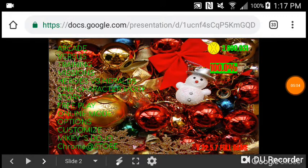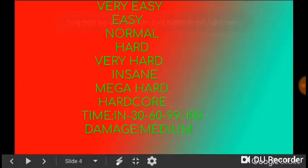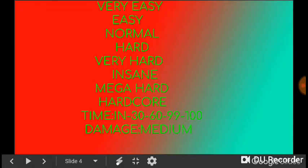A big idea is of MVS3. Character list. Wait, let me see the character list. Good. Very easy, easy, normal, hard, very easy, very hard, insane, mega hard, and hardcore. Time: infinite, 30, 60, 99, 100. Damage: medium. Now loading.